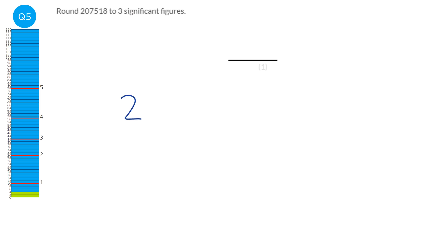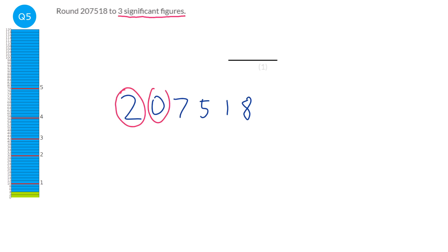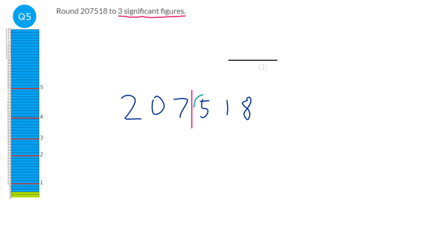We're asked to round this to three significant figures, which means starting from the left-hand side we want three numbers — one, two, three — and we draw a line after that third number. Start counting from the first non-zero digit; here the first digit is 2. All numbers to the right of the line will turn to zero, but before that we look at the next digit. If it's five or more, the third significant figure moves up by one. It is five, so it won't be 207 — it's going to be 208, making the answer 208,000.